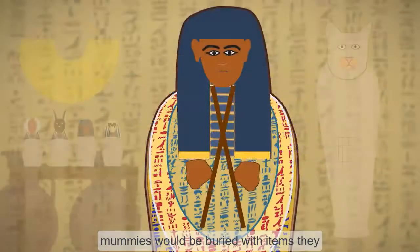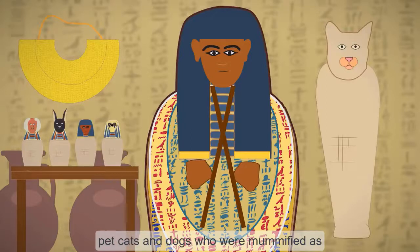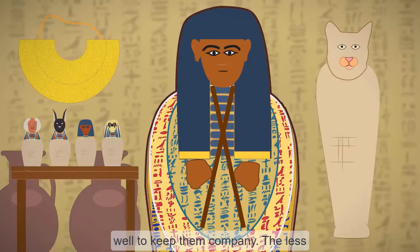Mummies would be buried with items they might have needed for the afterlife, including jewelry, clothes, furniture, even pet cats and dogs who were mummified as well to keep them company.